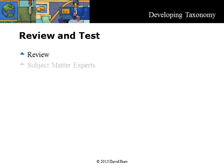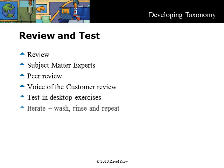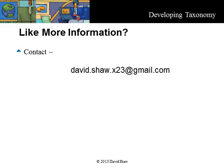Review the resulting model with subject matter experts, peer review, and voice of the customer reviews. Test the taxonomy by prototyping applications and desktop exercises. Wash, rinse, and repeat as many times as necessary to get it right — at least four iterations are usually required. This is the end of the three modules on developing a taxonomy. The next module will cover the development of a metadata model with different views. If you have any feedback or questions, please send me an email.